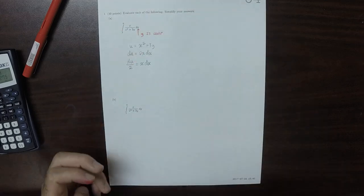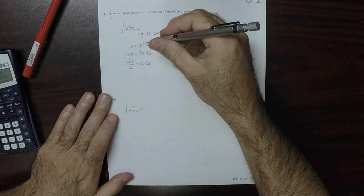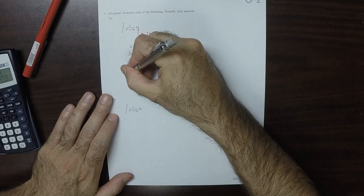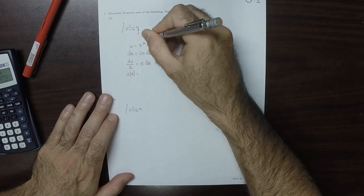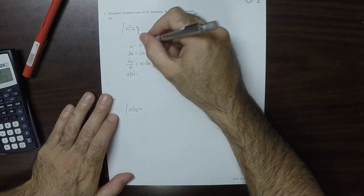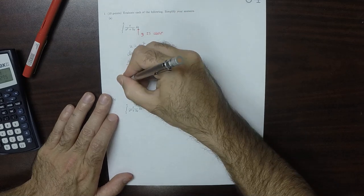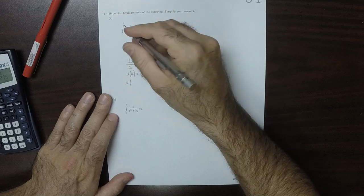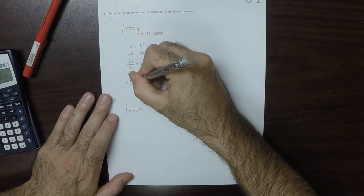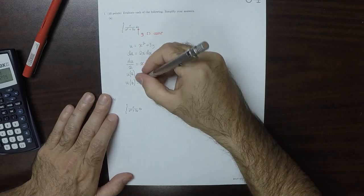I'll change the limits now. u evaluated at 2, at x is 2, would give 4 plus 3y. And u evaluated at x is 6 gives 36 plus 3y.